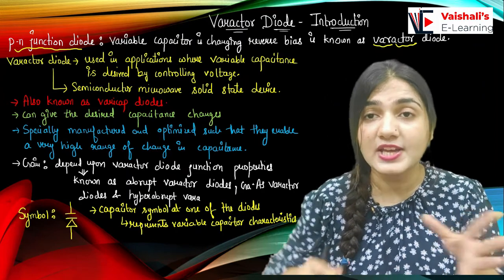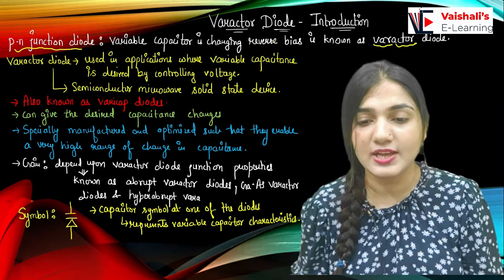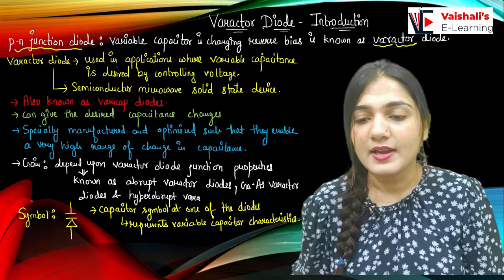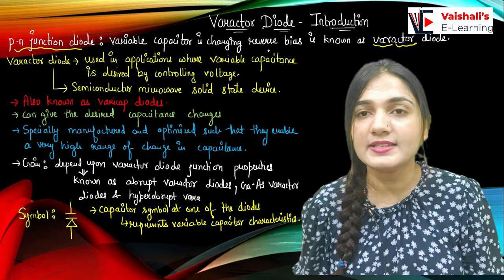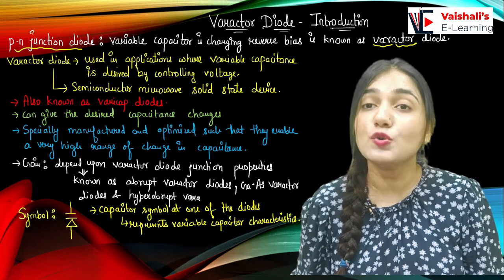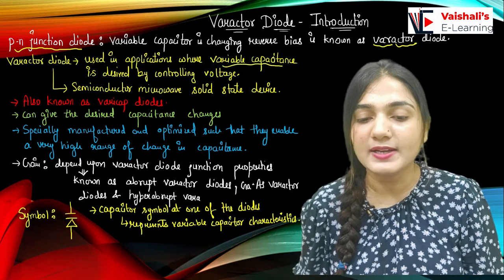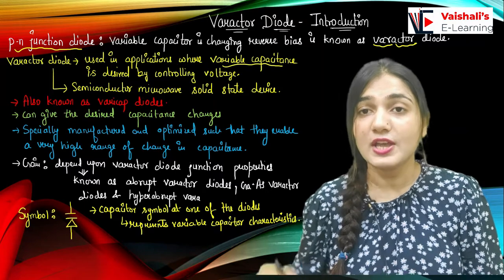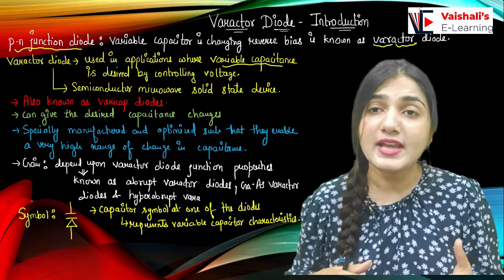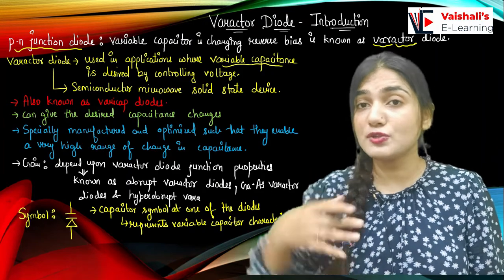With the help of voltage, I can change the capacitance. When I change the voltage in reverse bias, I will change the capacitance of the diode. When we operate it in reverse bias, the capacitance value changes. In applications where variable capacitance is desired by controlling the voltage — when I change voltage, my output is a variable capacitance — I should use the varactor diode.